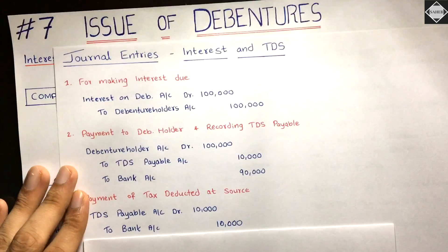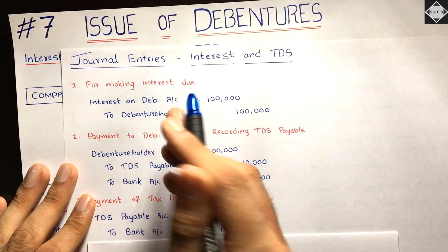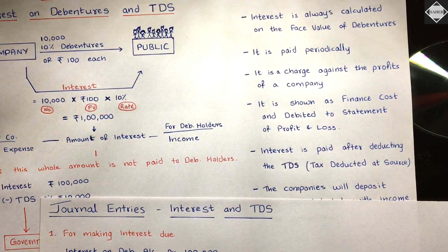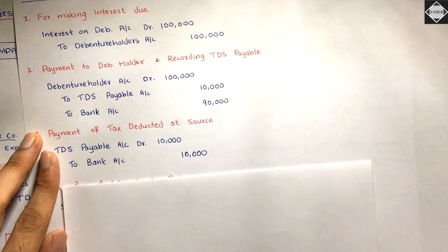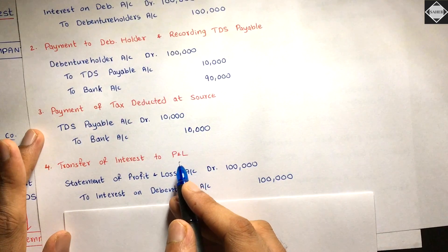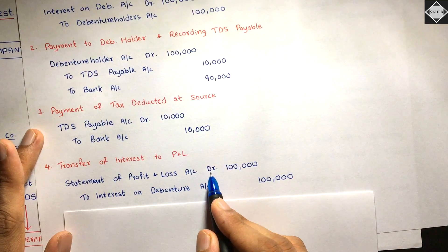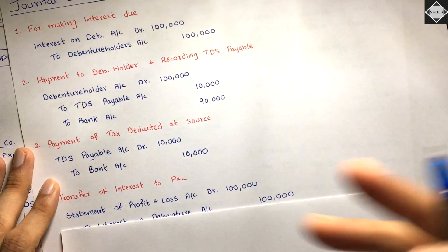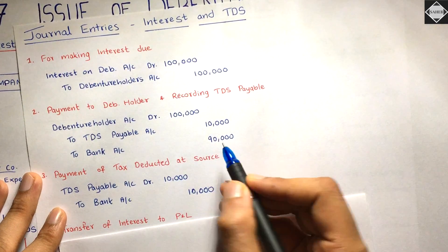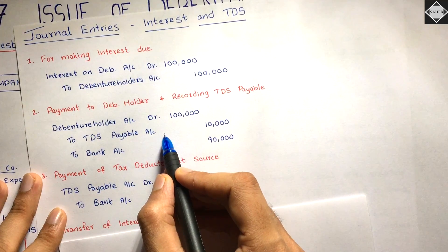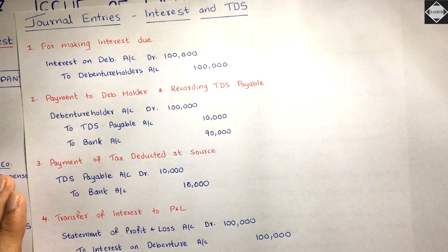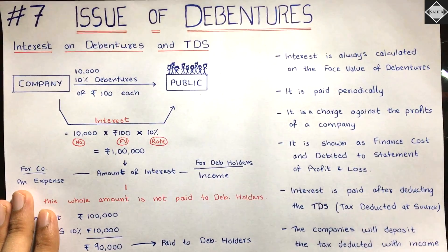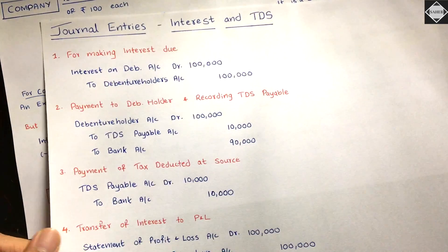The last open account is the Interest on Debenture Account. Since it is an expense, it must be closed by transferring to the Statement of Profit and Loss. Entry: Statement of P&L Account Dr. 1,00,000 | To Interest on Debenture Account 1,00,000. So from the company's point of view, they incurred an expense of 1 lakh, but debenture holders received only 90,000 — the difference of 10,000 is the tax paid to the government.